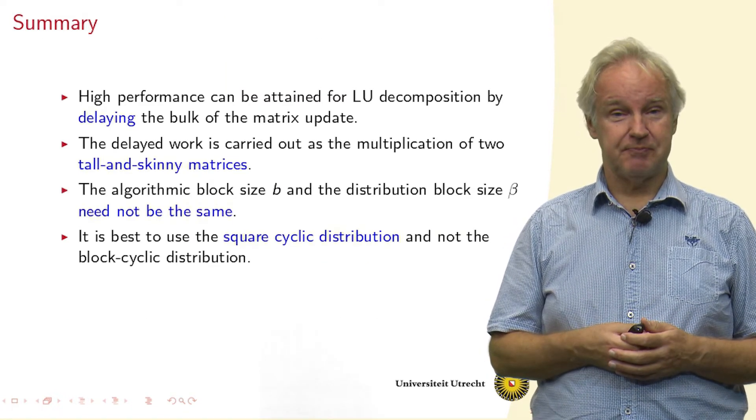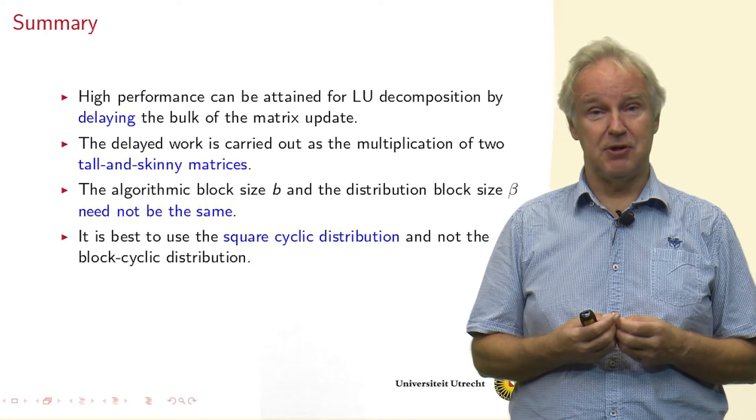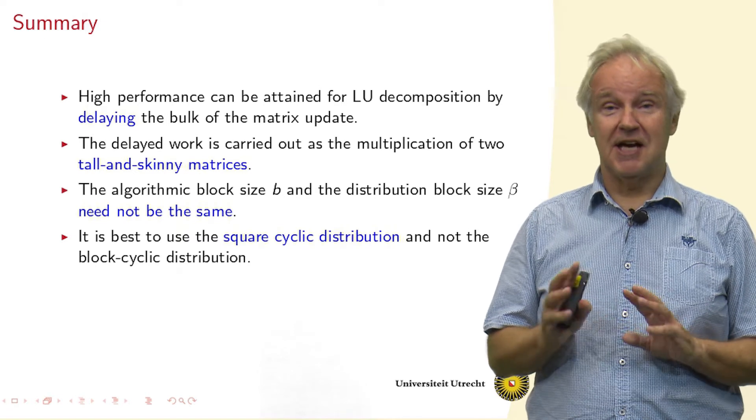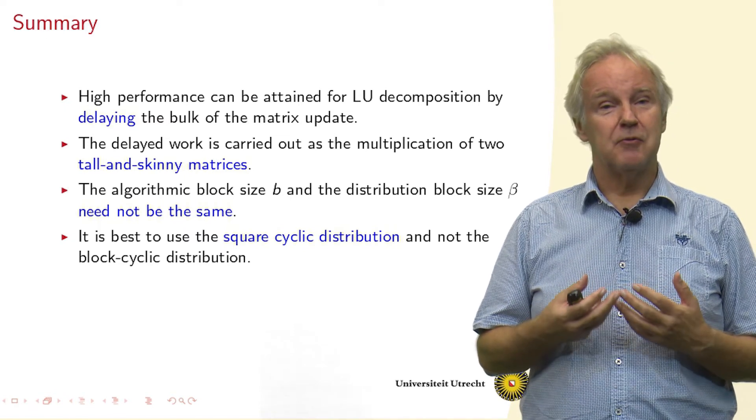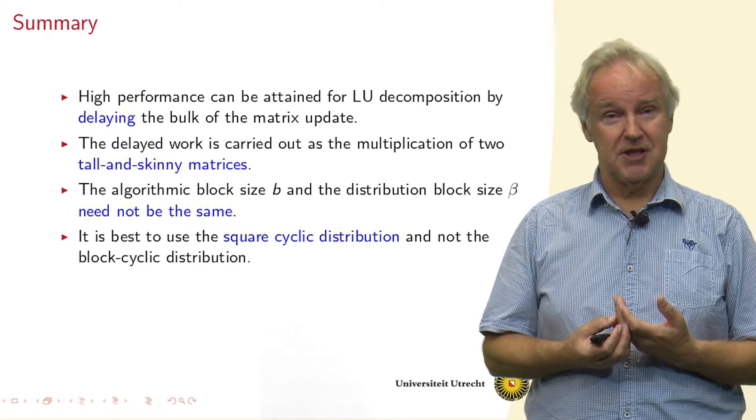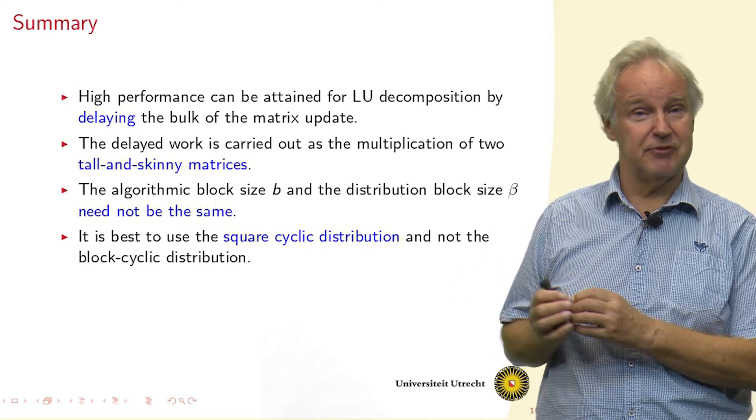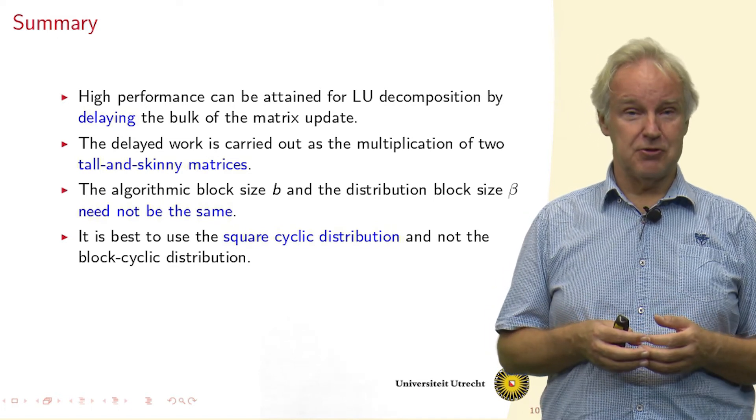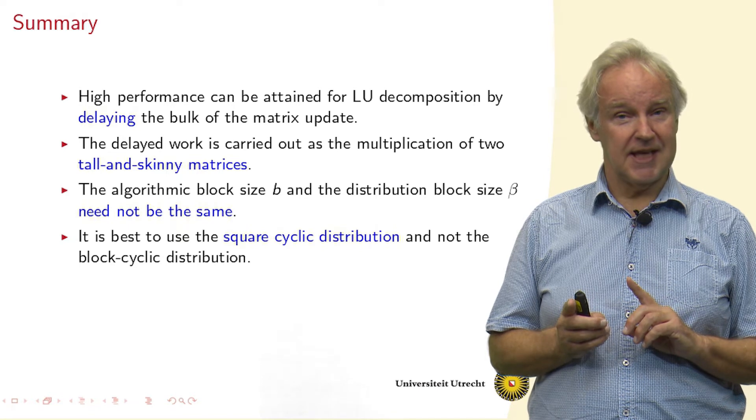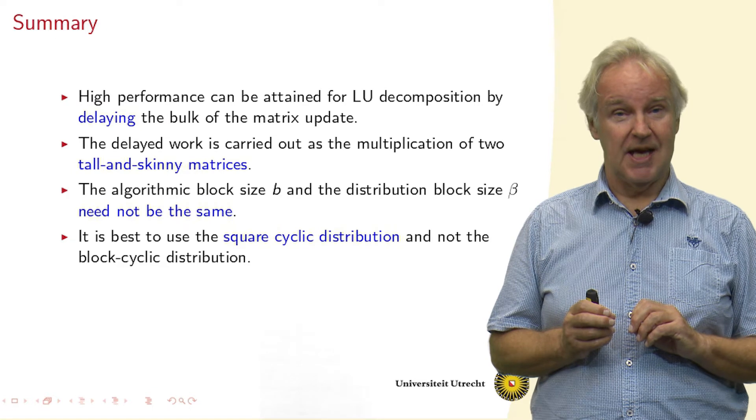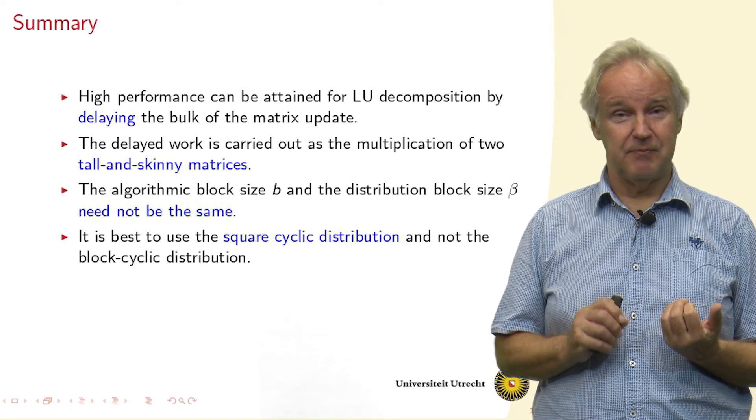Let's summarize this. We can obtain high performance just by trying to formulate algorithms in terms of matrix-matrix multiplication. Here, it's a tall and skinny matrix times the transpose of a tall and skinny matrix. Then we have seen that we can create matrix-matrix multiplications by using algorithmic blocking, delaying certain parts of the algorithm so that later we can do them efficiently. We also saw blocking of a distribution. The block cyclic distribution is an example. But then the two different block sizes can be different. They should not necessarily be the same. Actually, the best is to have a good block size for the algorithm, but just take blocks of size 1 for the distribution.